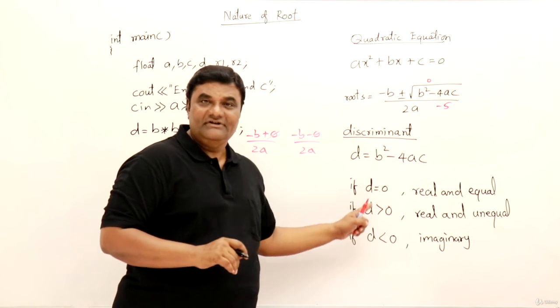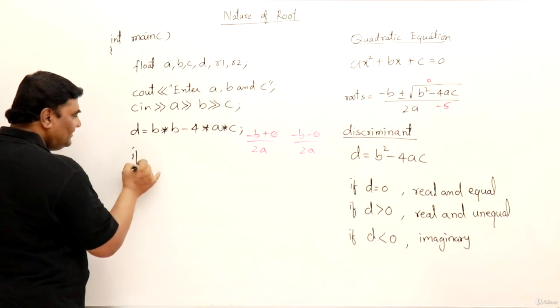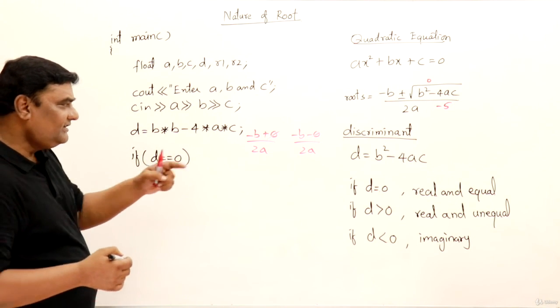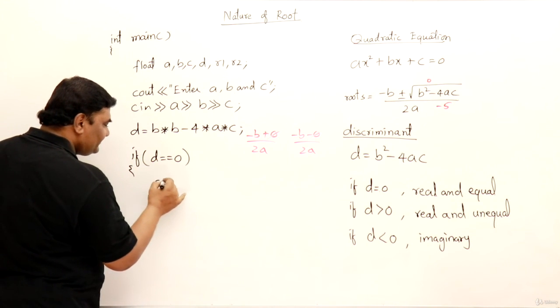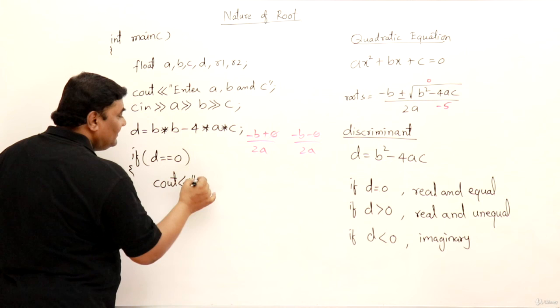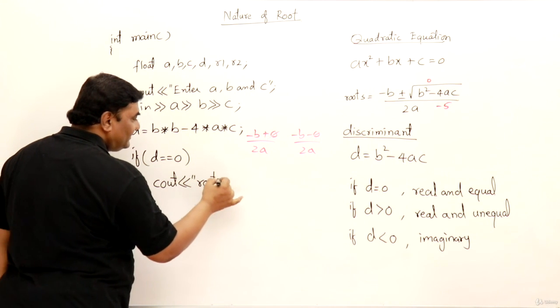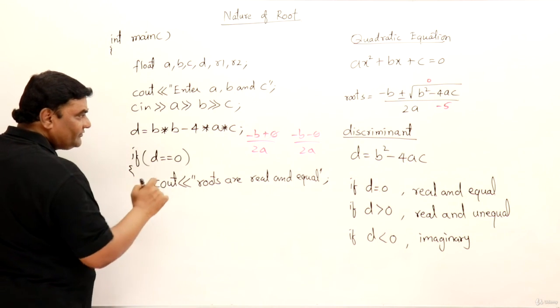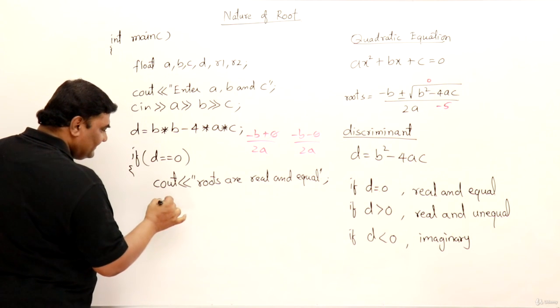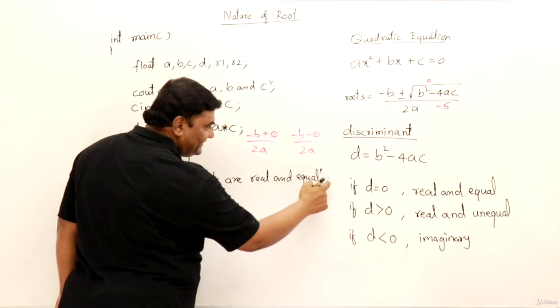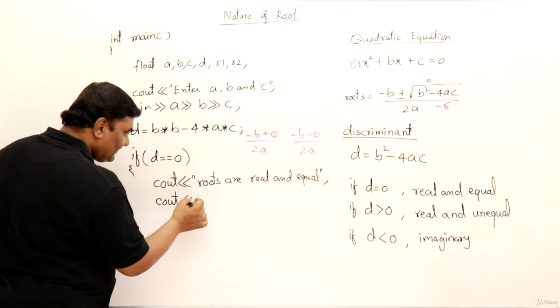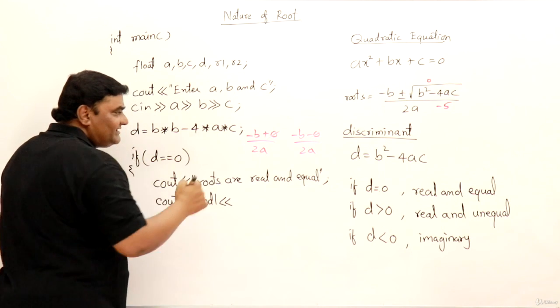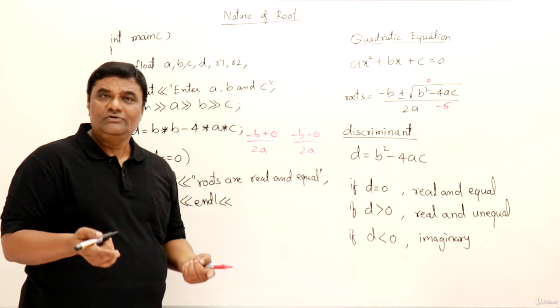Next, now I have to write if and else. First one, if this d is equal to 0, this d is equal to 0, I mean roots are equal and real. So I will give a message, cout roots are real and equal. Roots are real and equal. I will finish writing this. Then after this I want to display roots also. That is minus b by 2a.